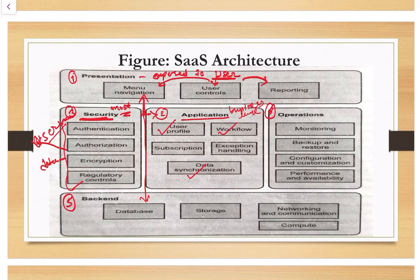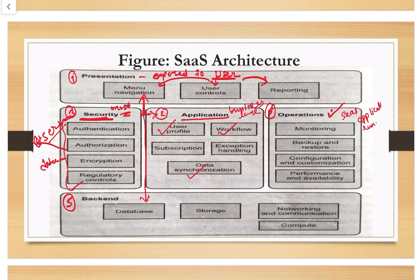The fourth layer is the operations layer. This layer provides the capabilities required to keep the SaaS application running — including running, pooling, and monitoring the required data components, configuring or customizing data as per business requirements. Availability of components, performance checks are some important tasks handled by the operations layer.